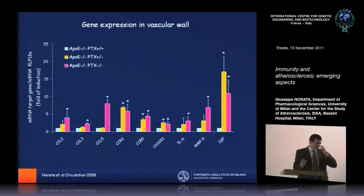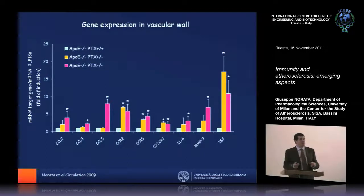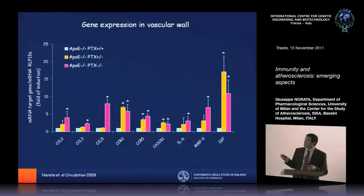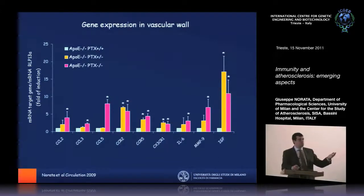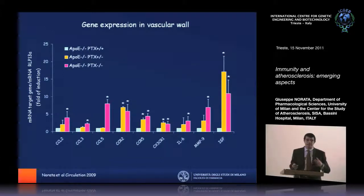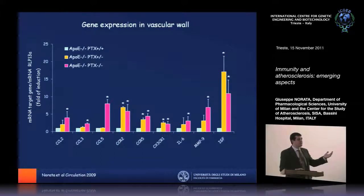We confirmed the cDNA microarray data with qPCR experiments, validating the genes observed to be increased in the previous approach. This confirmed the trend toward increased vascular inflammation in double knockout animals.